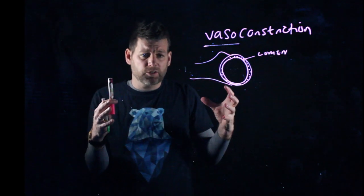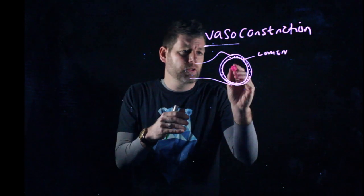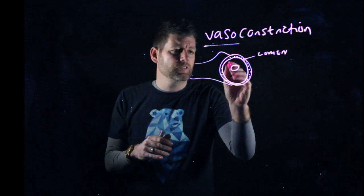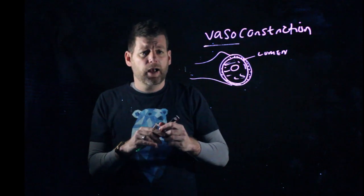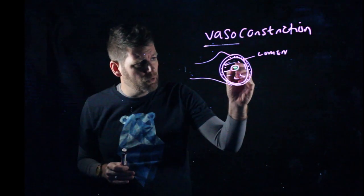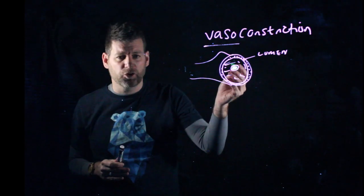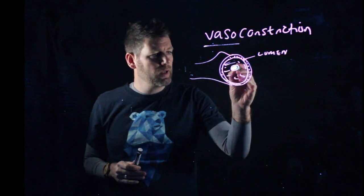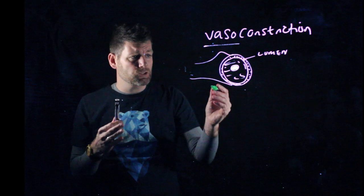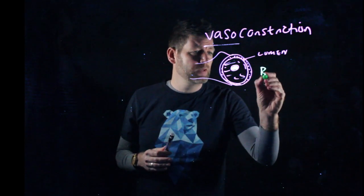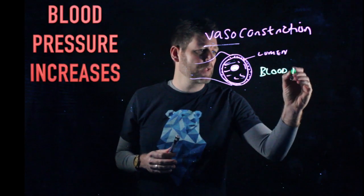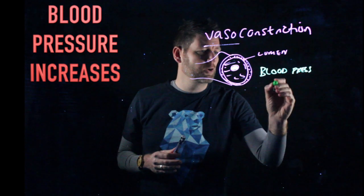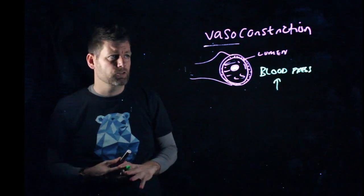And when it vasoconstricts this all kind of comes in and the lumen becomes a lot smaller and you can see here that I've kind of filled that in and all of the blood has to flow through that small area. I wanted to have a red pen. I've got a green. Humans don't have green blood. But it goes through a small space. So as a result blood pressure increases. So blood pressure goes up as a result of vasoconstriction.